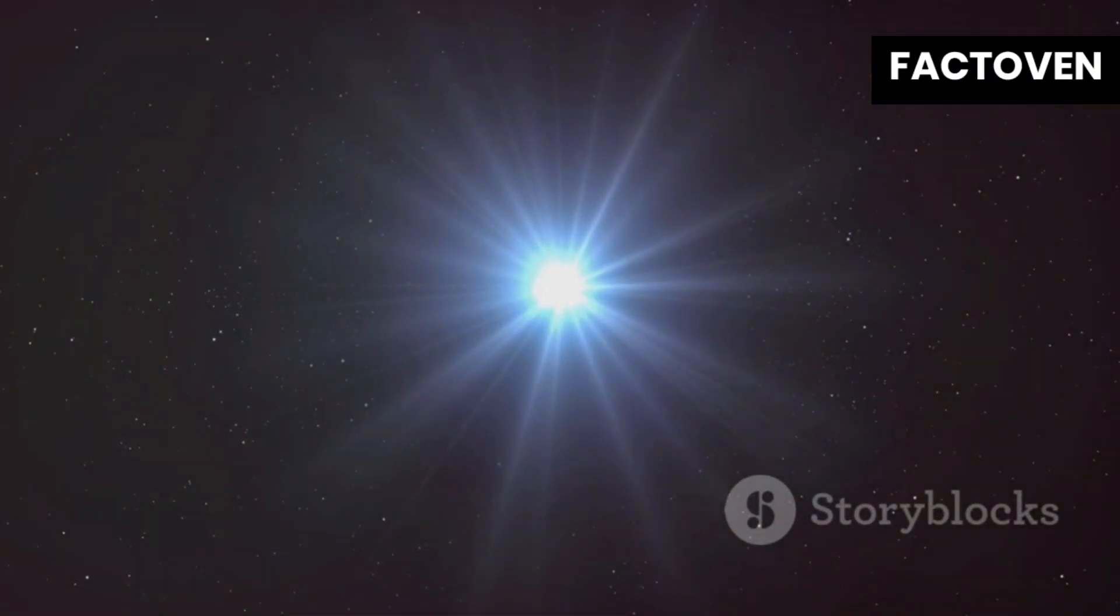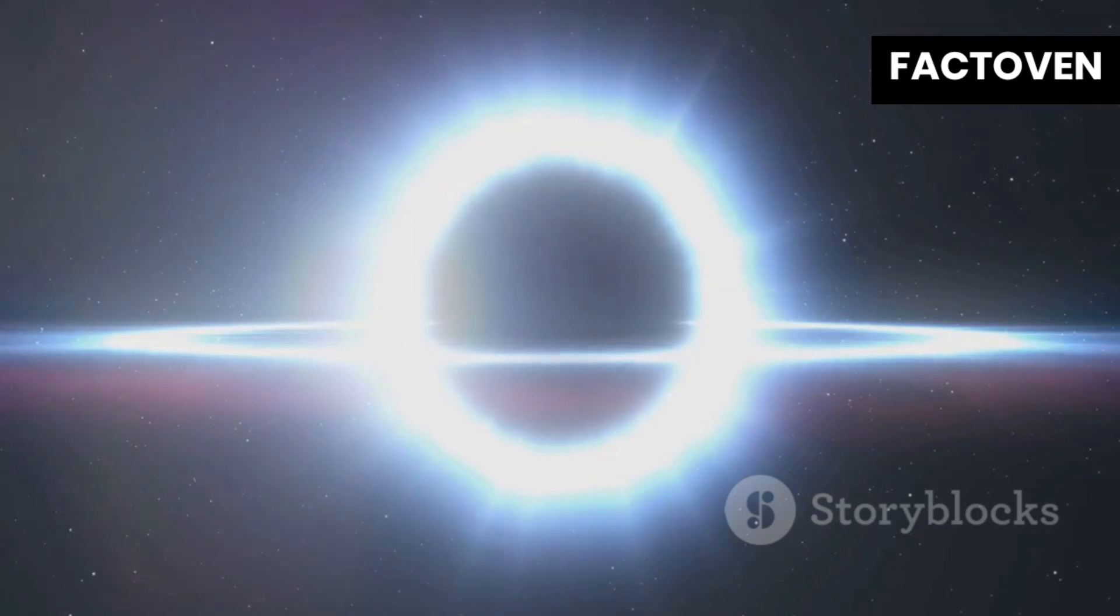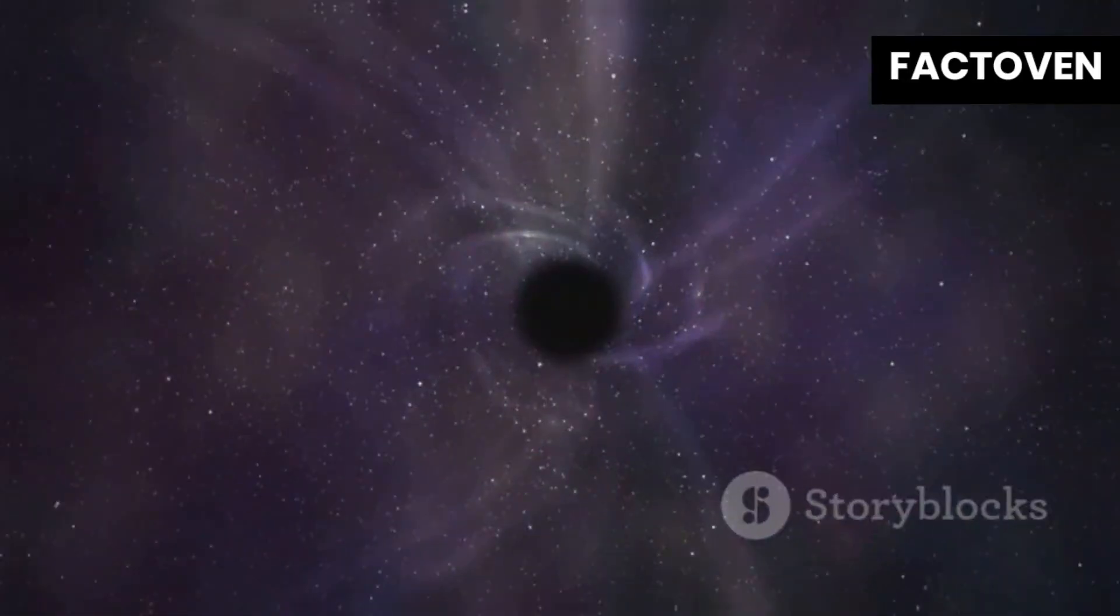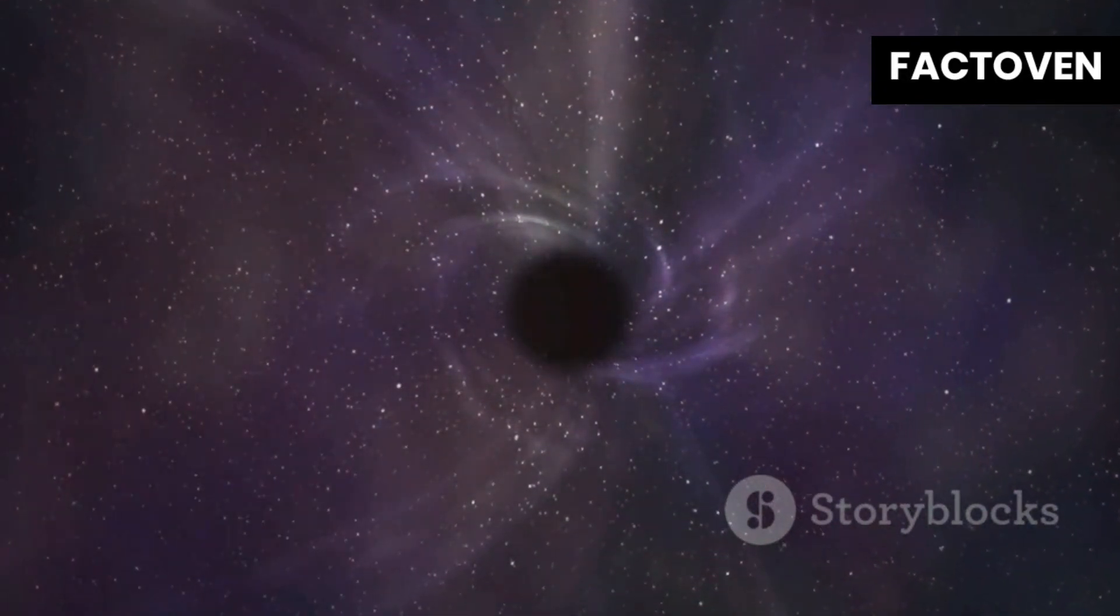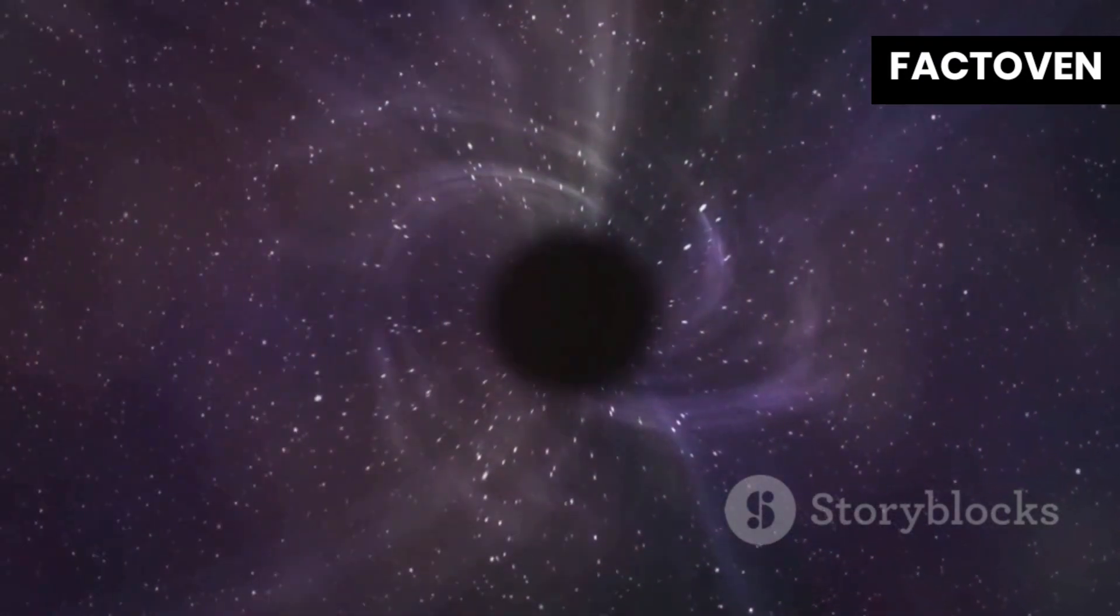Some theories propose that FRBs are caused by cataclysmic events like the collision of neutron stars, which release immense energy, or the dramatic collapse of massive stars into black holes, events that are powerful enough to send ripples across the cosmos.